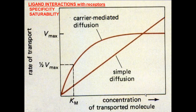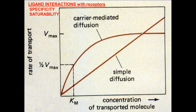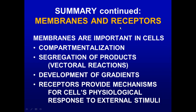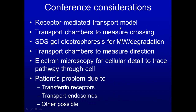Sometimes receptors transport things across — like transferrin. If receptors are present, there will be two characteristics: specificity, meaning high affinity for transferrin, and saturability. Simple diffusion would not plateau, but with receptors, increasing concentration does not add more transport because you run out of receptors to bind — it becomes saturated.